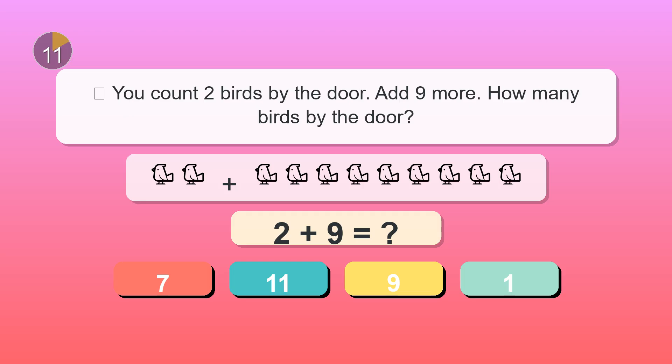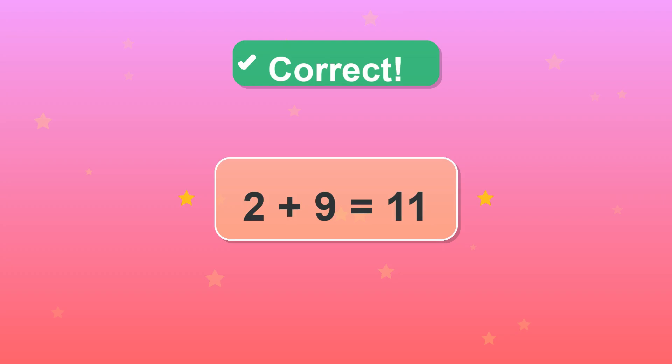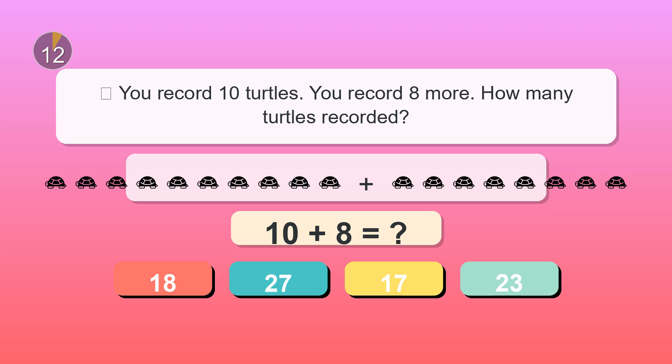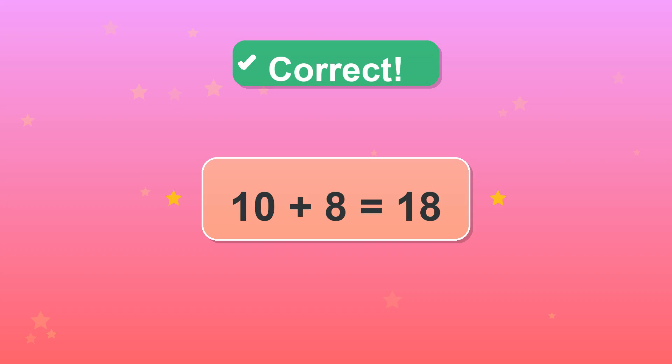You count two birds by the door. Add nine more. How many birds by the door? Right. 11. You record ten turtles. You record eight more. How many turtles recorded? 18. Brilliant.